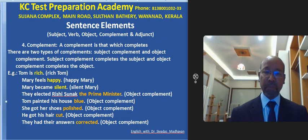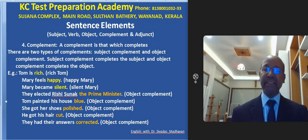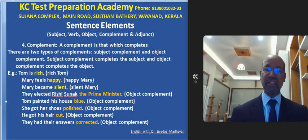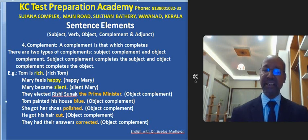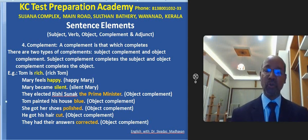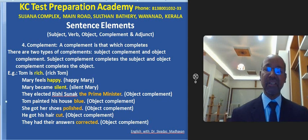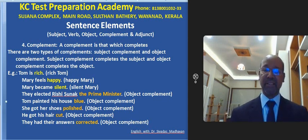Next, object complement. They elected Rishi Sunak the Prime Minister. They is the subject, elected is the verb, Rishi Sunak is the object, and the Prime Minister is the object complement.